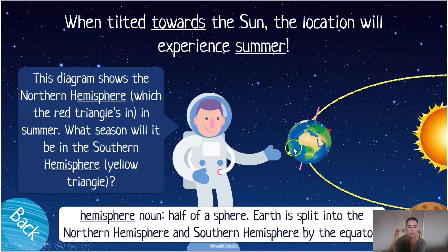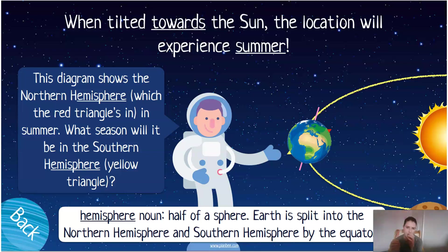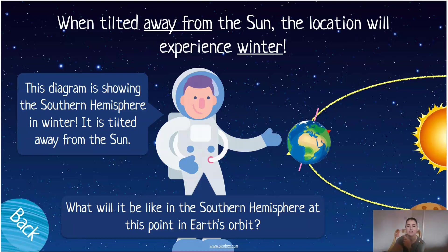What season will the southern hemisphere — the yellow part here — experience? Pause the video and see if you can tell me the answer. Let's recap: the Earth is split into two parts — the northern hemisphere and the southern hemisphere — divided by the equator, that invisible line through the middle. Well done if you got it right: the part of the Earth away from the sun is going to experience winter.